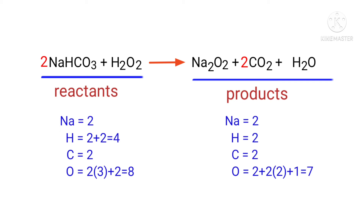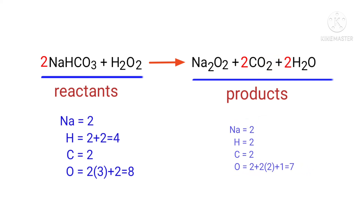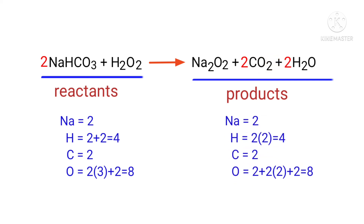Now we need to balance the hydrogen and oxygen atoms. To do this we need to put a coefficient of 2 in front of H2O. The equation is now balanced.